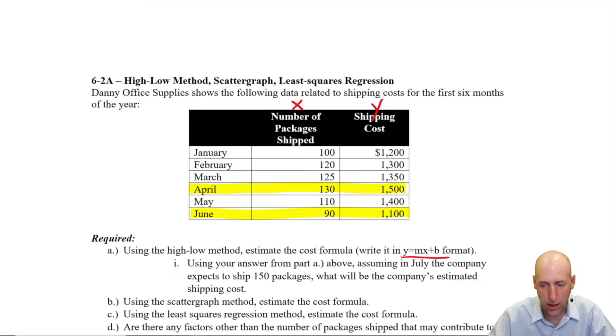And we take that data. So we say, okay, the month with the highest activity level, April, the cost in that month was $1,500. So we take the high cost, and it's really the high month cost, the cost in the month that was highest, minus low cost. And again, it's not the lowest cost on my chart, it's just the cost from the month that had the lowest activity level.